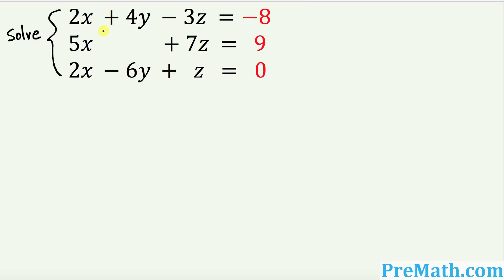Ask yourself: is there anything missing? There's a kind of empty spot — y is missing, so that means it's a zero. We can write zero y with a plus sign. Also, just z can be written as 1z, and 1 is going to be its coefficient. So the coefficients we have are: 2, 4, negative 3, 5, 0, 7, 2, negative 6, and 1.